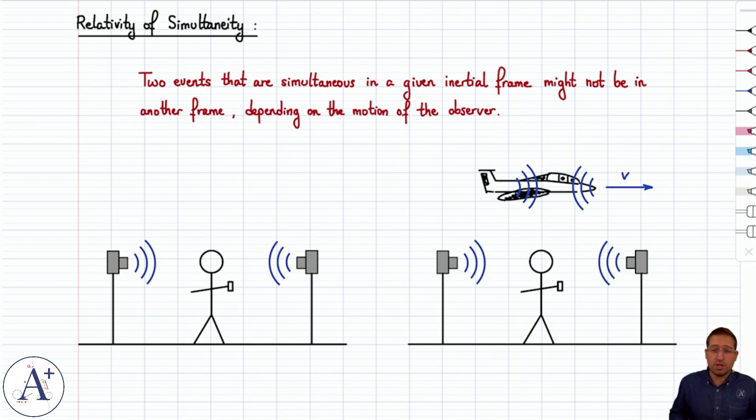And so to the observer in the jet, these two events are not simultaneous. Again, it's because of the motion of the observer.